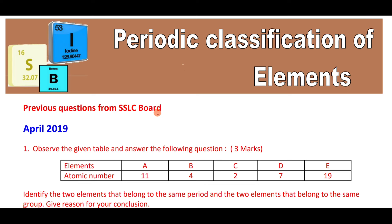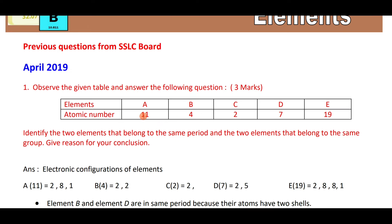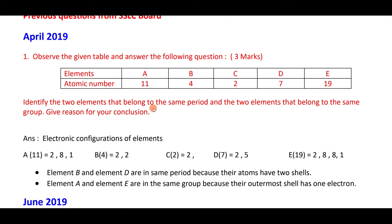Periodic Classification of Elements — you have to understand four laws and the periodic table conceptually. Modern periodic table and periodic trends: if you learn all concepts, you can score good marks. Observe the table: element A has atomic number 11, B has 4, C has 2, D has 7, and E has 19. Identify two elements belonging to the same period and the same group.